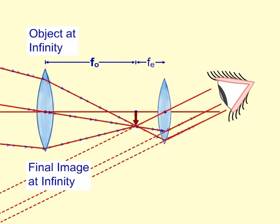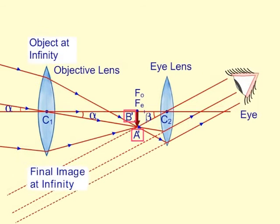It forms a real, inverted and diminished image A-B- of the object. The eyepiece is so adjusted that A-B- lies at the focus of the eyepiece.